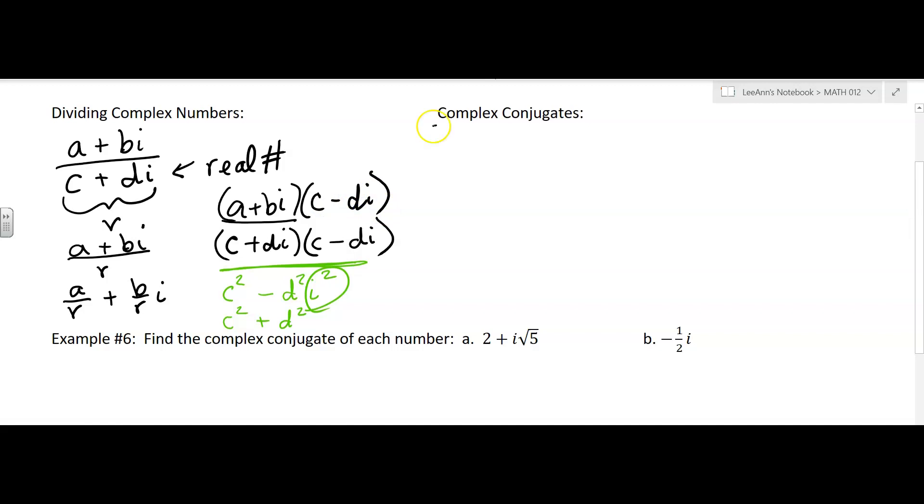Now we're going to talk a little bit more about complex conjugates. So it's what I said over here that we're trying to get the difference of squares, that situation. So if you have 3 minus 4i, the complex conjugate is going to be 3 plus 4i.